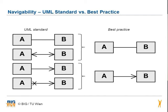This slide shows the different possibilities to show navigability. The best practice of the upper two models of UML standard is the upper version — just a line. The best practice of the lower two examples of the UML standard is also the upper version, where one end has a head and there is no cross at the other end.